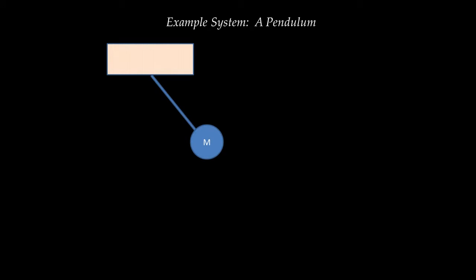The first goal is to build a state-space model of a simple rotational mechanical system. We want to transition from translational mechanical systems to rotational mechanical systems. The second goal is to introduce the Modelica language for dynamic system modeling. I'm going to start with the first goal: a pendulum of mass M and length L attached to a fixed foundation, acted upon by an external torque U of T. The output is the angle Y of T between the pendulum and the vertical.